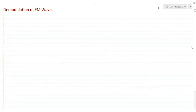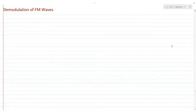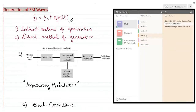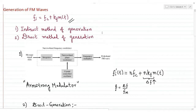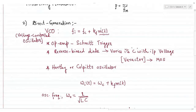In the previous session we talked about generation of FM signals using two methods. We discussed the indirect method of generation using an Armstrong modulator, which we covered as an overview since it's not in detail for our syllabus. We also discussed in detail the direct method of generation, where we directly vary the frequency of the carrier in accordance with the message signal m(t).